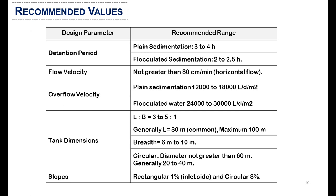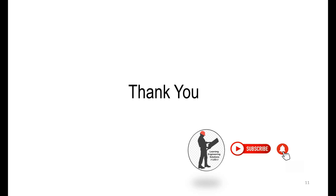For tank dimensions, the length-to-breadth ratio should be 3–5:1, the length should be 30 to 100 meters, and the breadth should be 6 to 10 meters. For circular sedimentation tanks, the diameter should not exceed 60 meters and generally should be 20 to 40 meters. Regarding slopes, for rectangular sedimentation tanks the slope should be 1%, and for circular tanks it should be 8%.